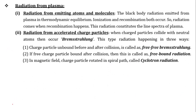Radiation from plasma: since charged particles are moving in plasma, radiation is emitted. There is radiation from emitting atoms or molecules, and black body radiation emitted from plasma in thermodynamic equilibrium. Both ionization and recombination occur, and radiation is emitted when recombination happens, giving the line spectrum of the plasma.